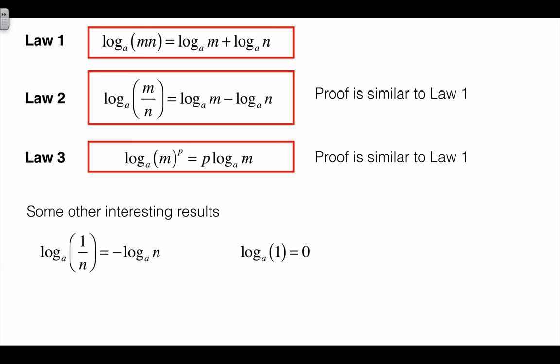So when we multiply inside the log, we add the logs. When we divide inside where the logarithm's been taken, we subtract the logs. And if we have something to the power of p, we pull it out the front.